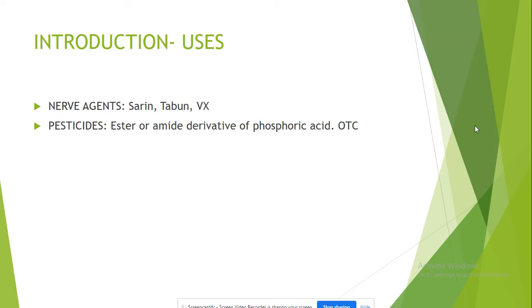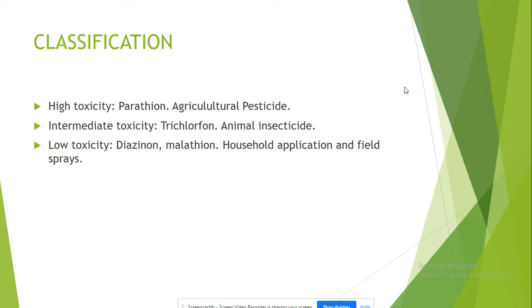So first, let's talk about the basic types. The government or military uses the NARB agents, which are sarin, tabun, and VX agents, but those are less common. Commonly, we see the pesticides, which are actually derivatives of phosphoric acid, and we can buy them over the counter. We can also classify them based on toxicity — the highest toxicity is seen in agents like malathion, while the common ones like diazinon and malathion are actually low toxicity.